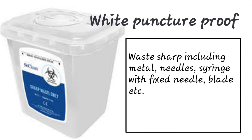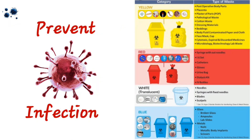The white puncture-proof container — which you may have seen in hospitals — holds sharp waste including metal needles, syringes with fixed needles, blades, etc. So syringes without needle go into the red bin, while syringes with fixed needles — like pre-prepared fixed needle syringes — go into the white puncture-proof box. This segregation of biomedical waste is done mainly to prevent infection.